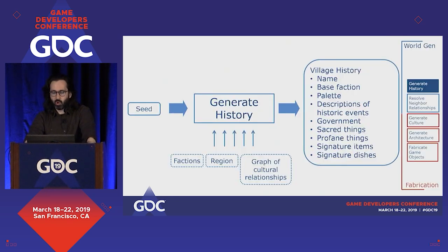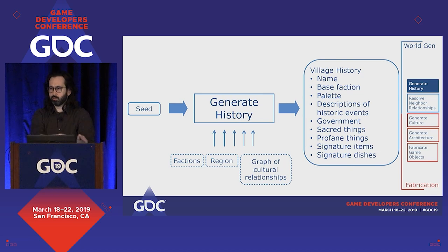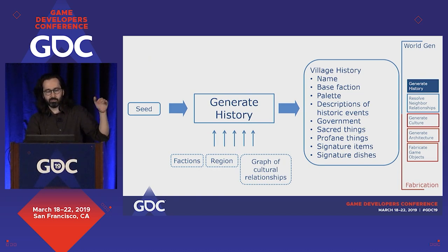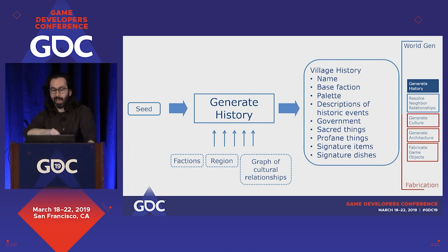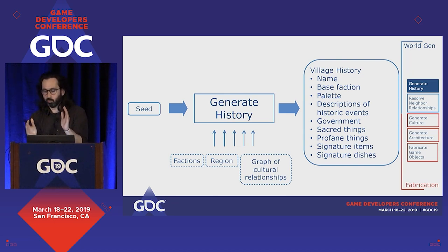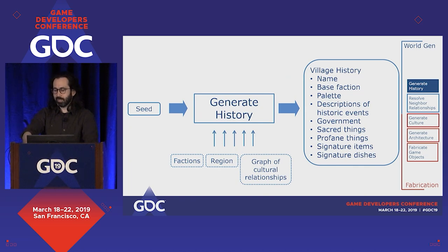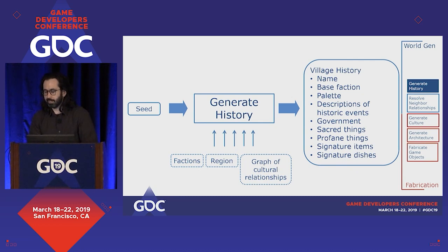We're on the first step: Generate History. Let me describe the slide format we'll use for the rest of the deck. Input comes in from the left — dynamic inputs generated per game — and from the bottom — design inputs, the static pre-baked data from the design phase. Output is shown for each step. On the right panel, all five steps are listed and the current step is highlighted. The top and bottom of that panel indicate which phase we're in — world gen or fabrication. For steps one and two we're in world generation; for steps three through five we're in fabrication.